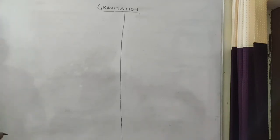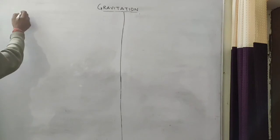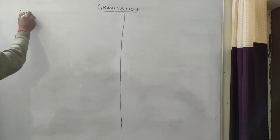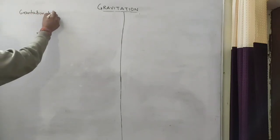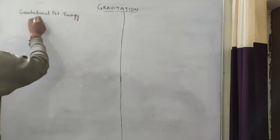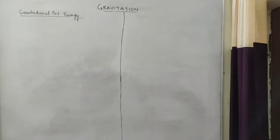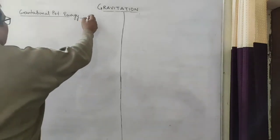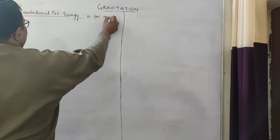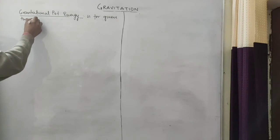Let us continue with gravitational field terms. So next is gravitational potential energy. Just like gravitational potential — in gravitational potential you obtain the work done in bringing a unit mass from a given point within the gravitational field — same is the case here, but here we have to bring a given mass, not a unit mass.